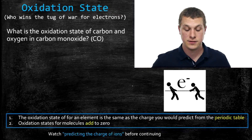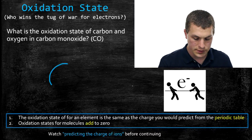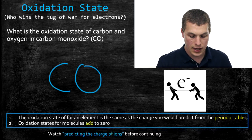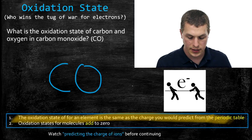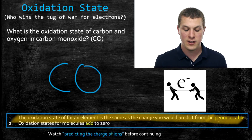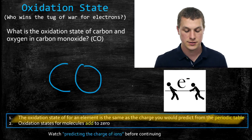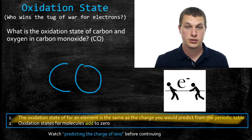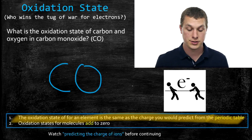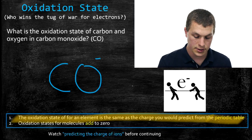So how do we calculate the oxidation state for carbon and oxygen in carbon monoxide? We need two rules. The first rule says the oxidation state for an element is the same as the charge you would predict from the periodic table. If you're not sure what I mean by that, watch my video on predicting the charge of ions. Looking at carbon and oxygen, we can't predict the charge on carbon, but we can predict the charge on oxygen — we know the charge on oxygen is minus two, so the oxidation state on oxygen is minus two.